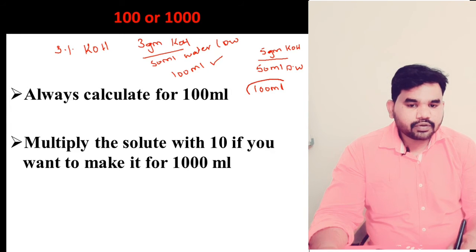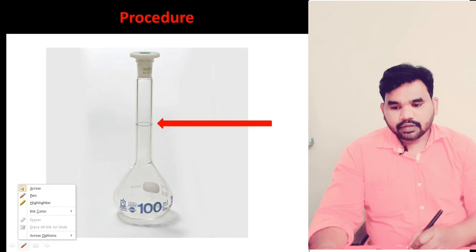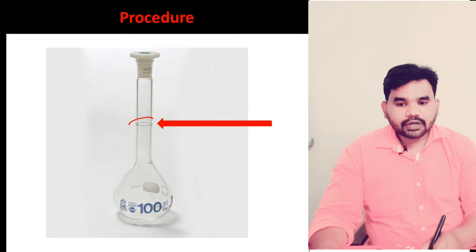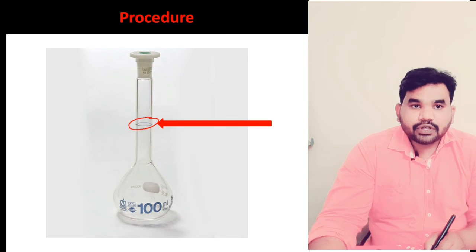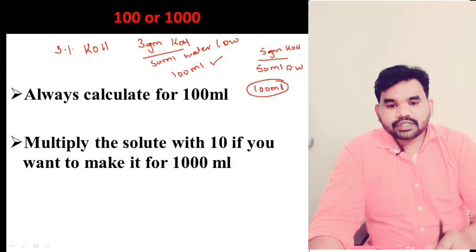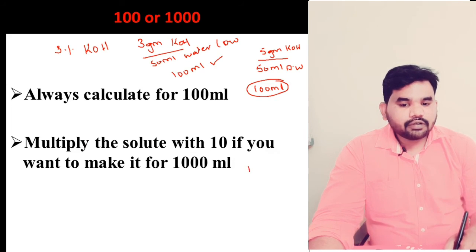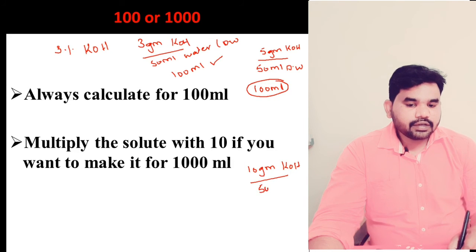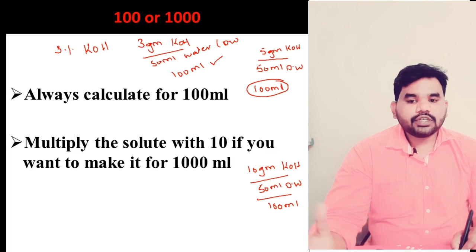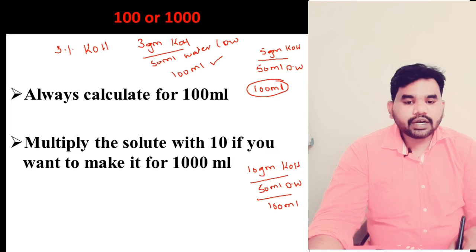Making the volume up to 100 ml means you have to add extra amount of water and make sure the water mark touches the mark which is present on the flask. This is how you make 3% KOH, 5% KOH, or 10% KOH. If it is 10% KOH, then you have to measure 10 grams of KOH, add it to 50 ml of distilled water, and make it up to 100 ml.